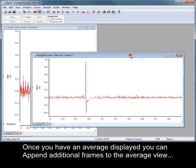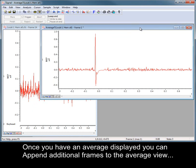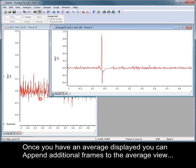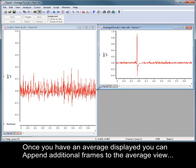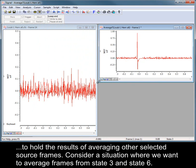Once you have an average displayed, you can append additional frames to the average view to hold the results of averaging other selected source frames. Consider a situation where we want to average frames from state 3 and state 6.